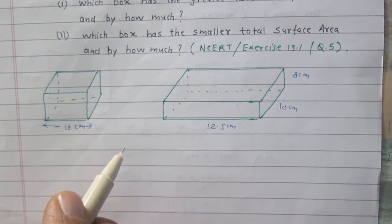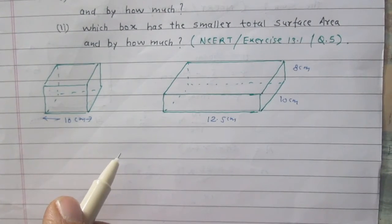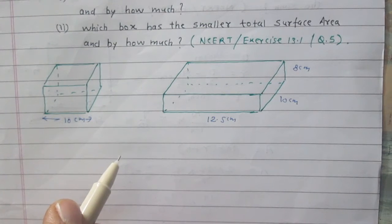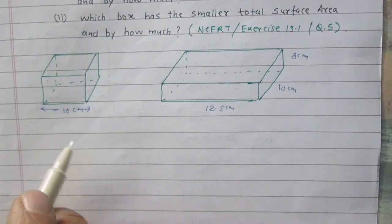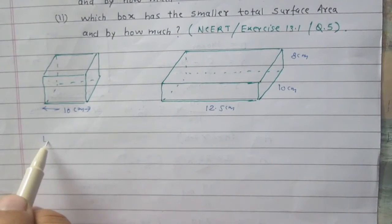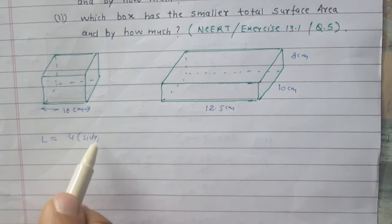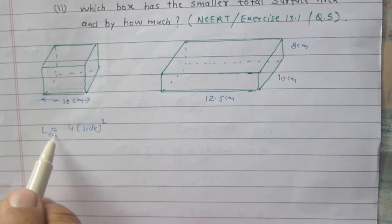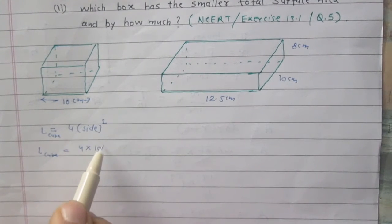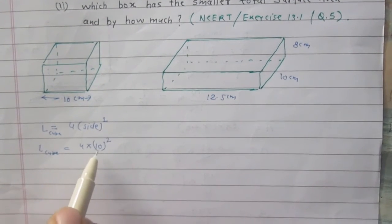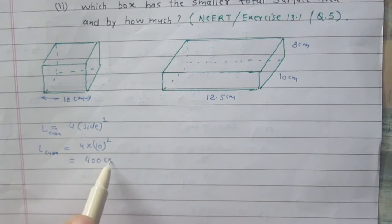Let us start with lateral surface area. The lateral surface area is the surface area of a solid without its top and without its bottom. So, lateral surface area of a cube is 4 times its side squared. Lateral surface area of the cube is 4 times 10 squared, which gives 400 cm².